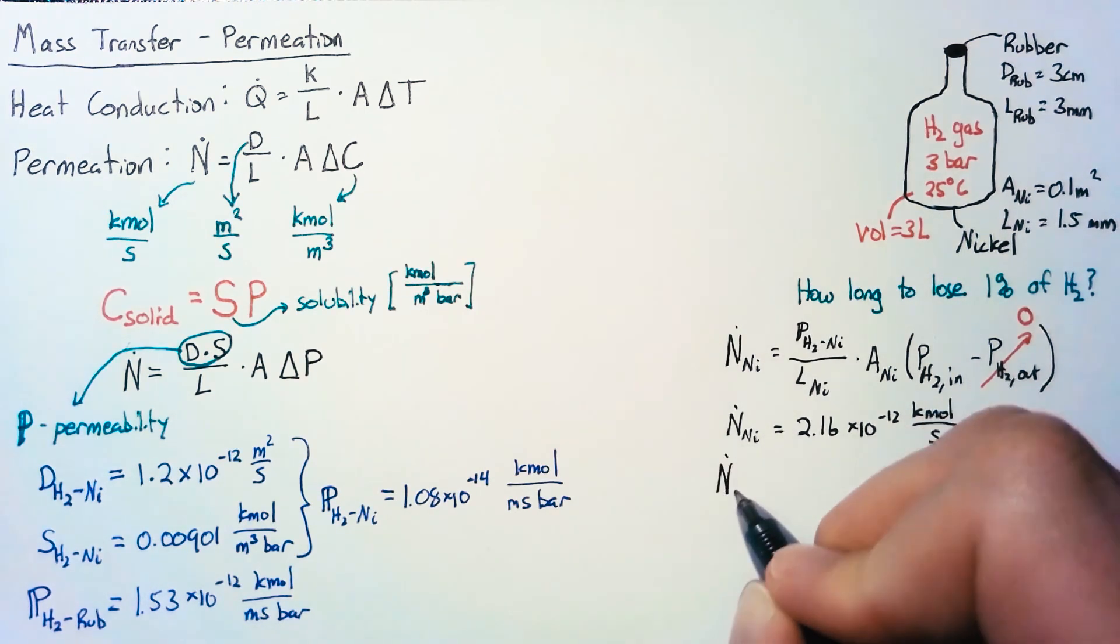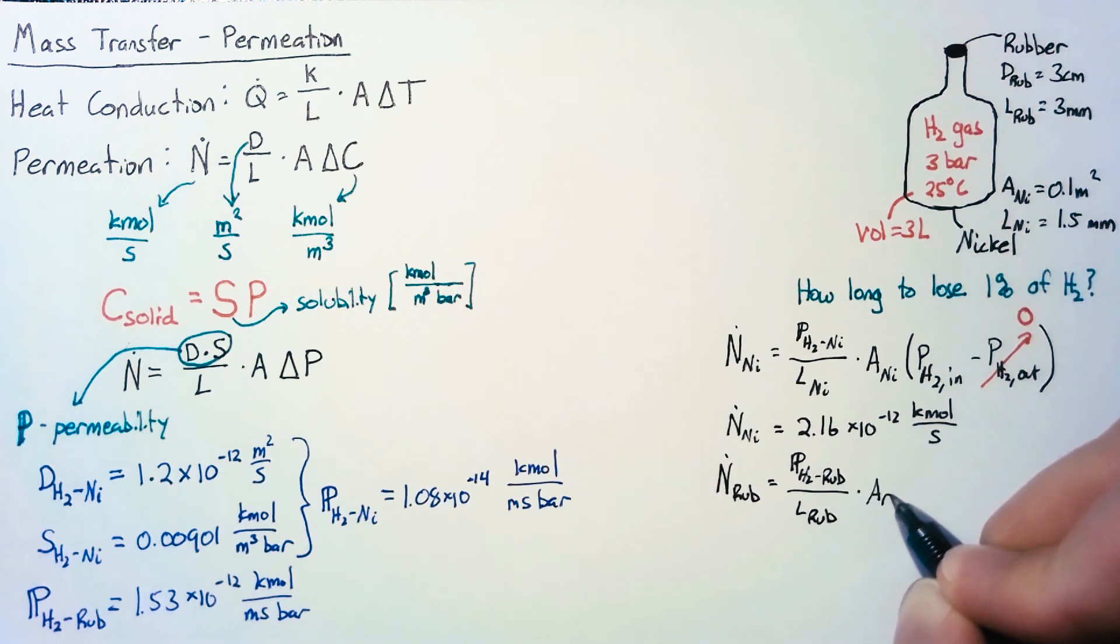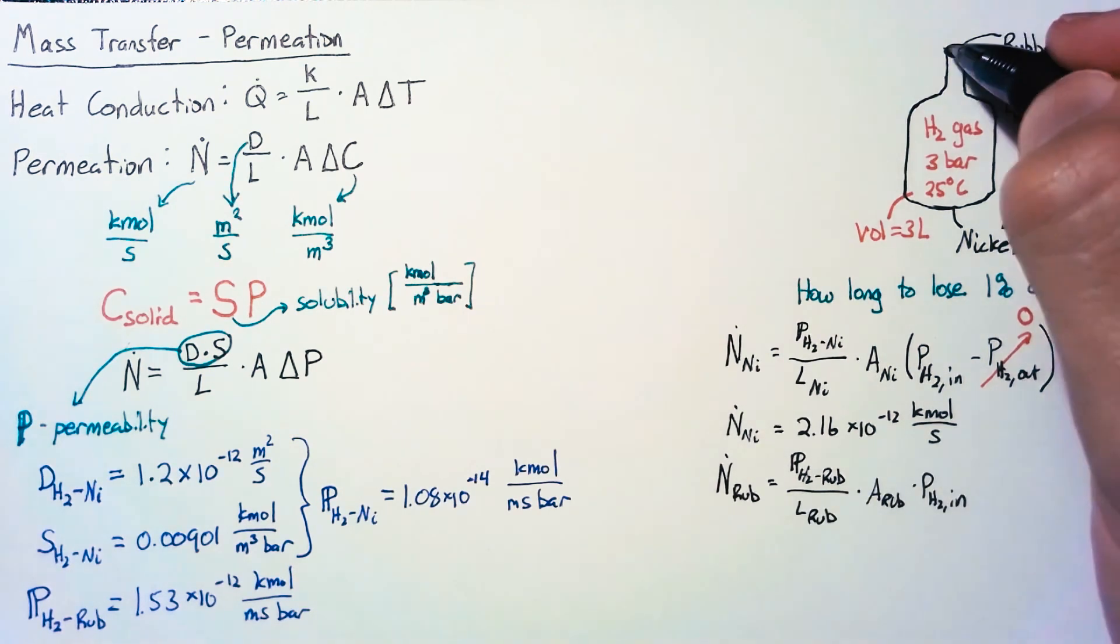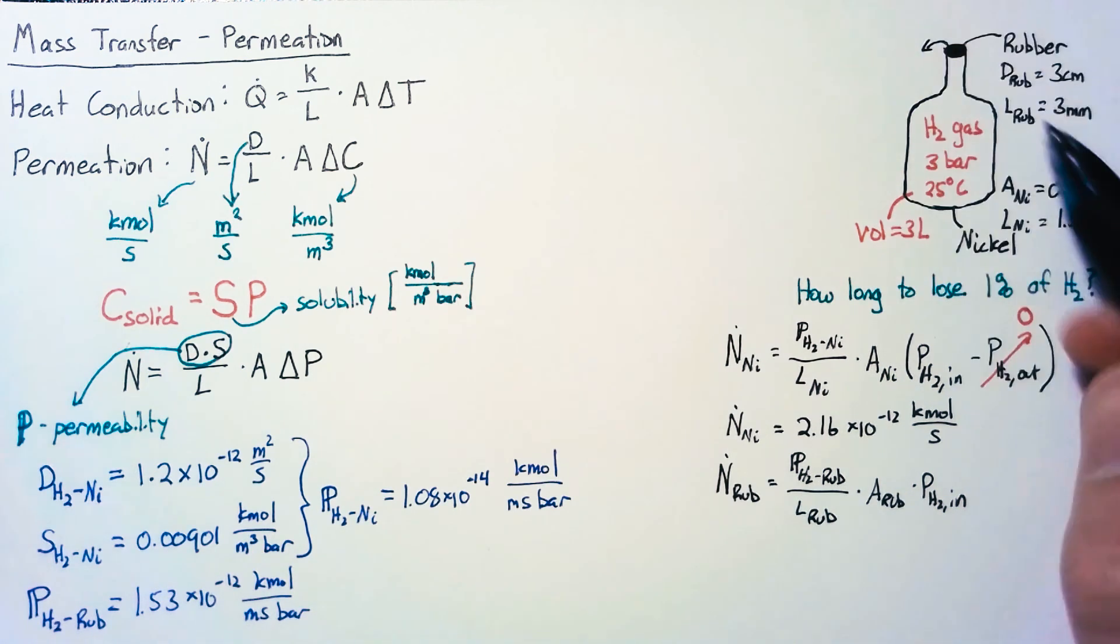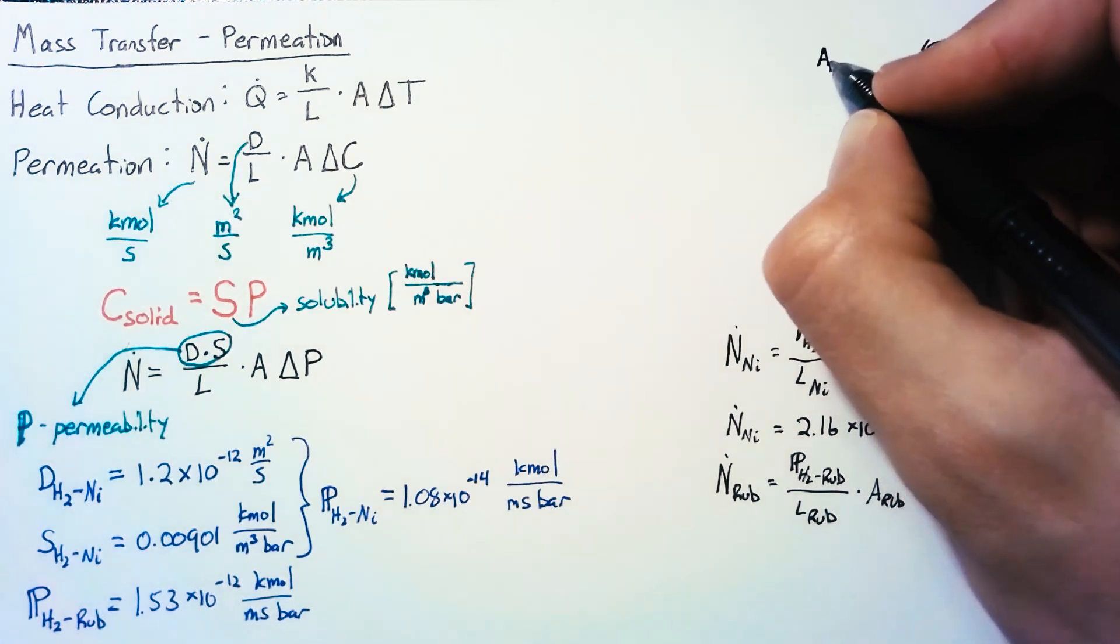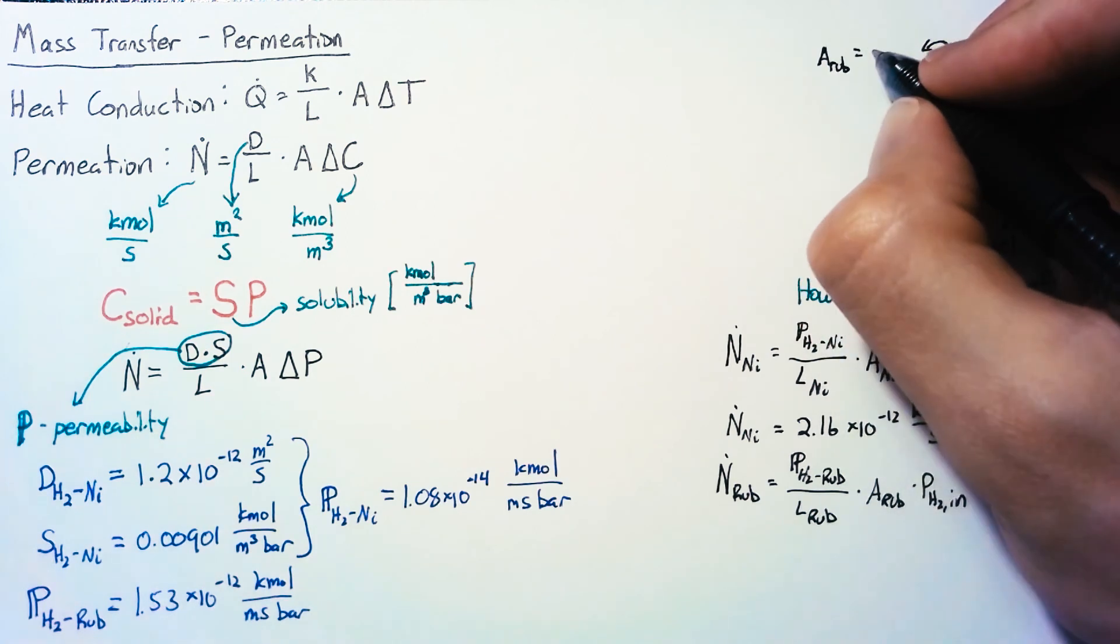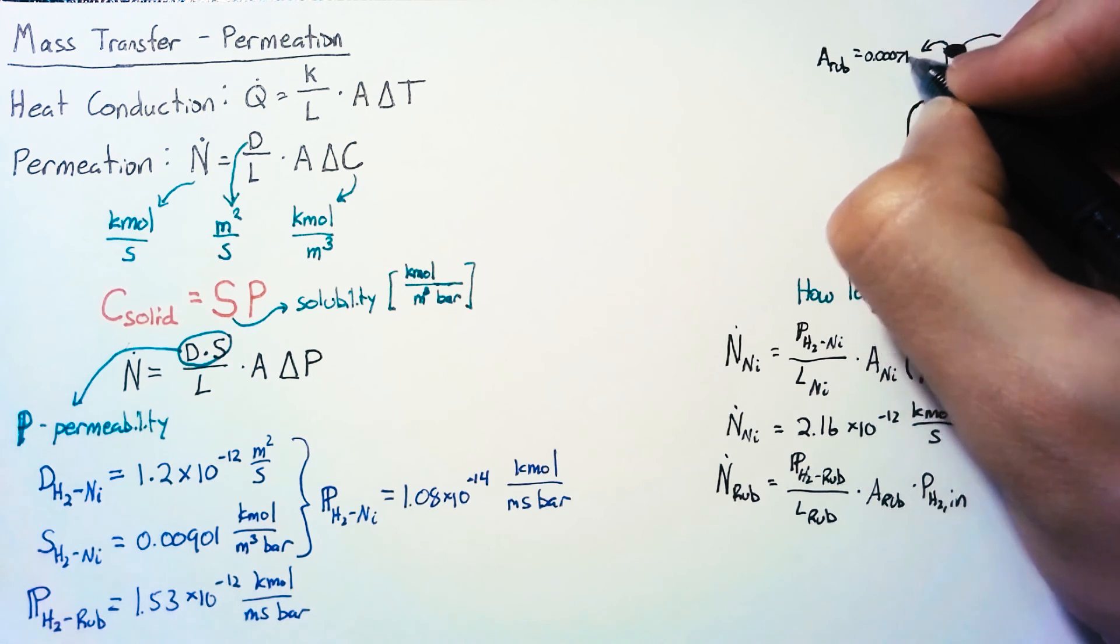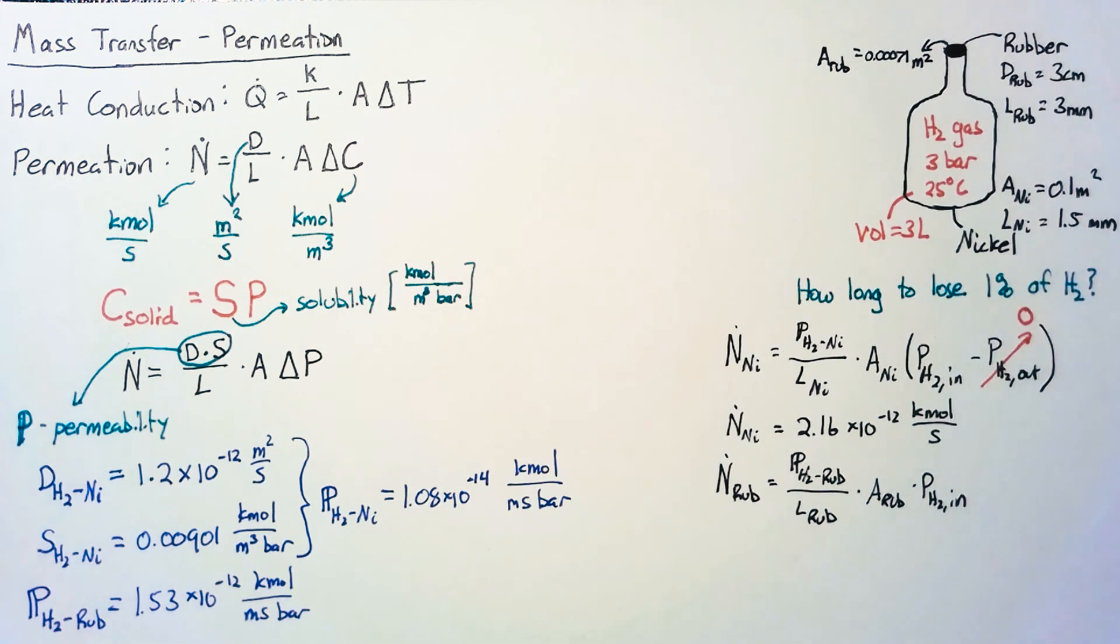Now let's do the same thing for rubber. We haven't calculated the area of this rubber seal yet, but we can find it from πd²/4, which gives us 0.00071 meters squared. Plugging those values in, we end up with a molar flow rate of 1.09 × 10⁻¹² kilomoles per second.